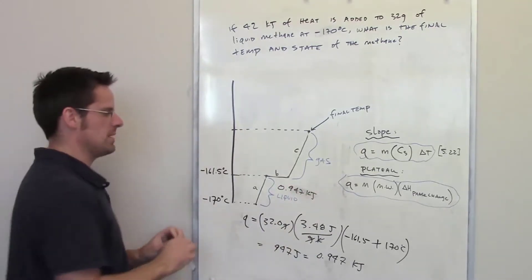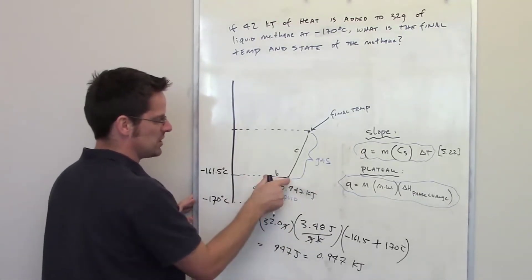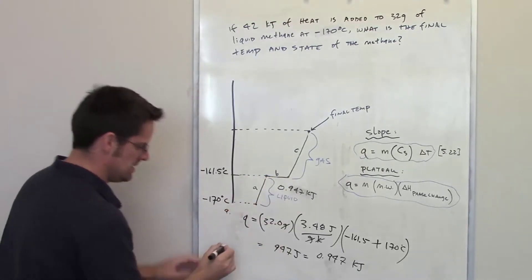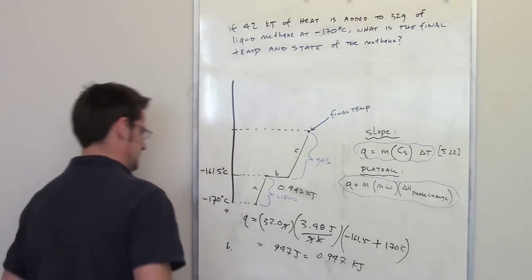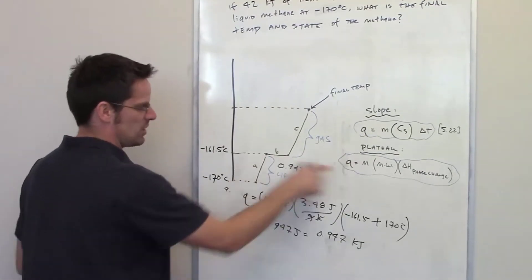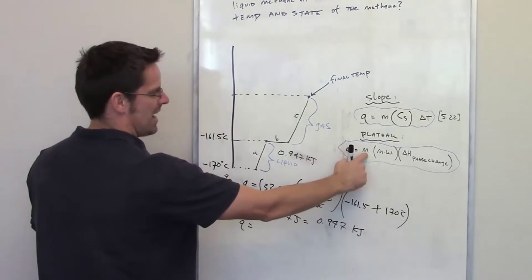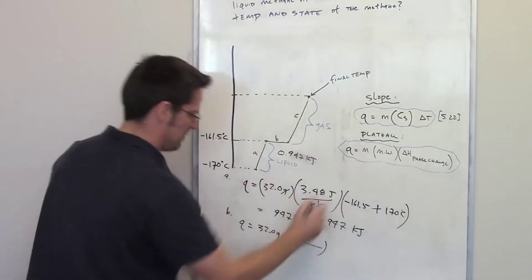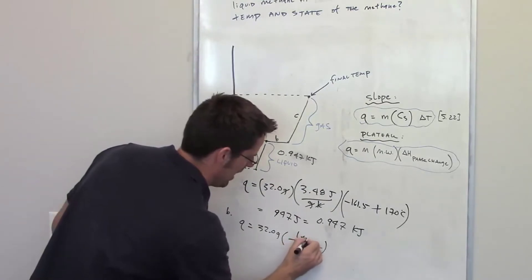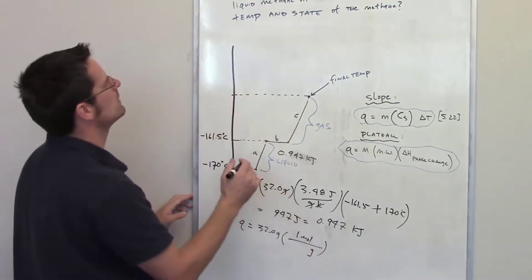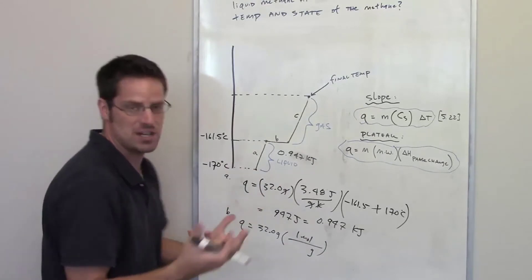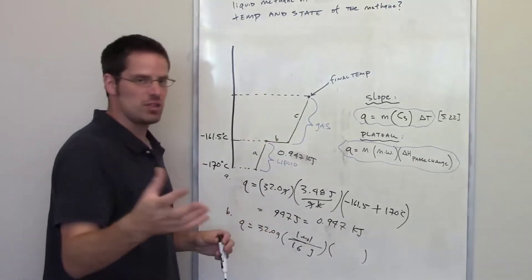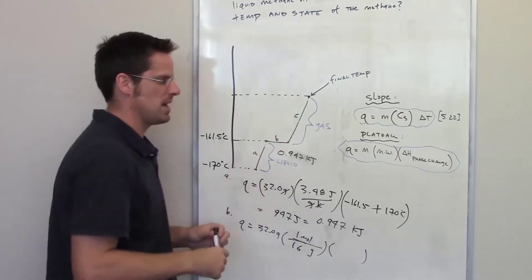Now, the next thing I need to determine is how much energy is going to be consumed going across plateau B. B is a plateau, so I'm going to use a plateau equation. Q equals mass. The mass I've been given is 32 grams multiplied by the molecular weight. One mole of methane gas - the formula is CH4 - that is 16 grams, multiplied by the enthalpy of phase change, that is going from a liquid to a gas for methane.